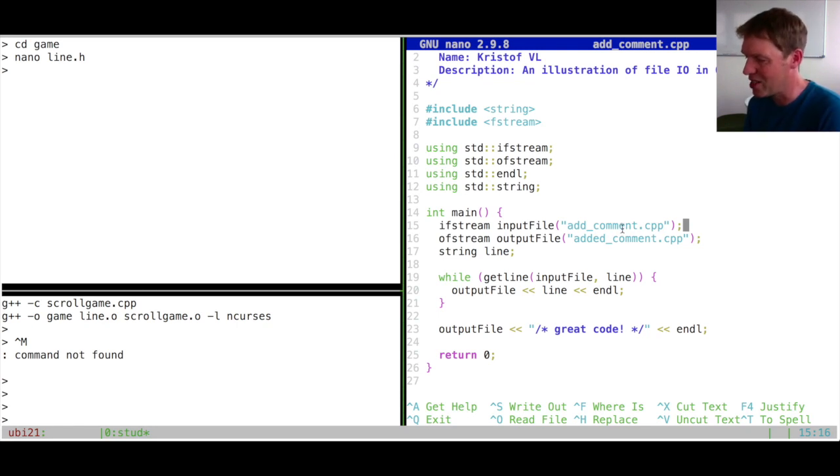And in my main function I now have an input file and an output file. What is interesting here is that the input file is exactly the file that I'm now viewing. So add_common.cpp is exactly what I'm defining as input file, and output file is where I'm going to copy things to. So I'm doing exactly the same as we saw in the example, except that I'm not just copying the contents of file one to file two. I'm also adding here an extra line which is basically a comment saying great code. That's why this file is called add comment.